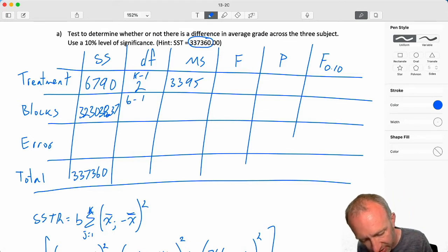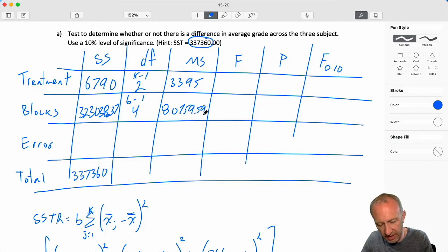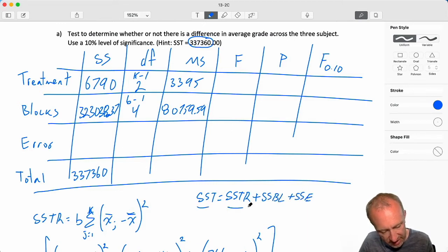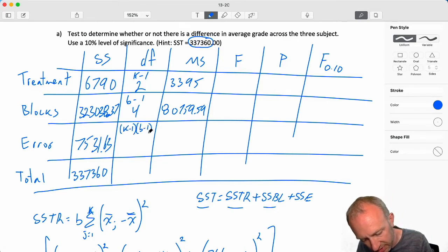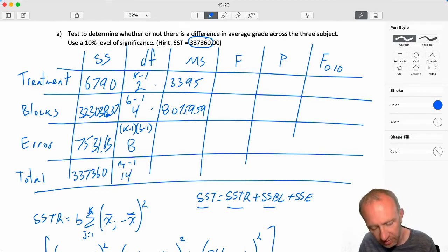Degrees of freedom here, B minus 1. I have 5 blocks. B minus 1 is 4. Divide that sum of squares block by 4. That gives me 87,759.59. Now I'm going to use this relationship to calculate sum of squared error. Because I have SST, I just calculated SSTR and SSBL. So SST there is 337,360 minus sum of squares block minus sum of squares treatment. And that gives me my error, 73,163. Degrees of freedom here, K minus 1 times B minus 1. So what's the product of these two is 8. Degrees of freedom total, N T minus 1, 14.